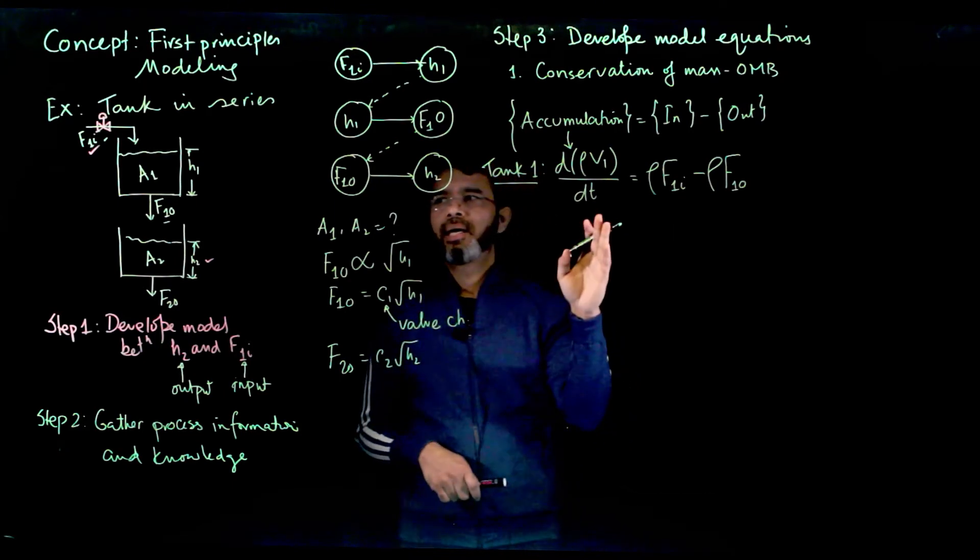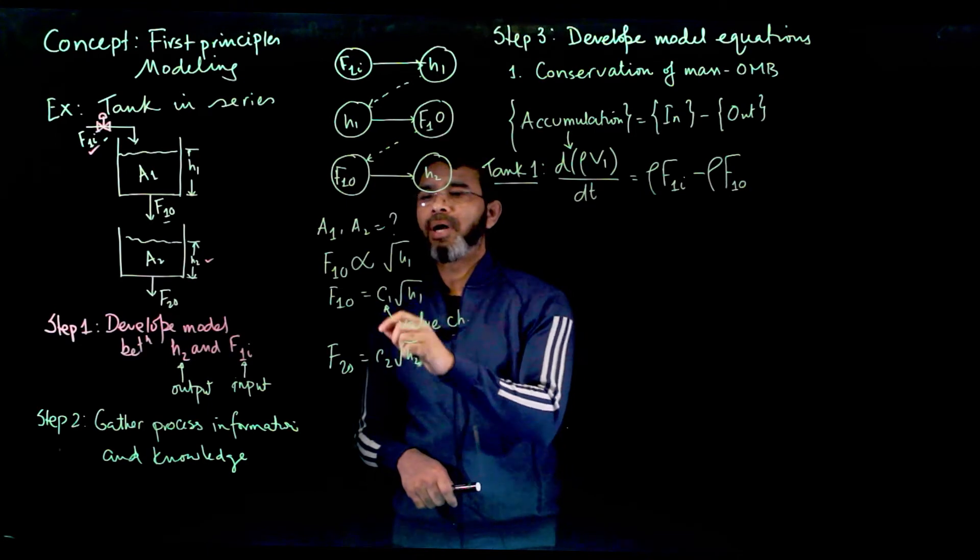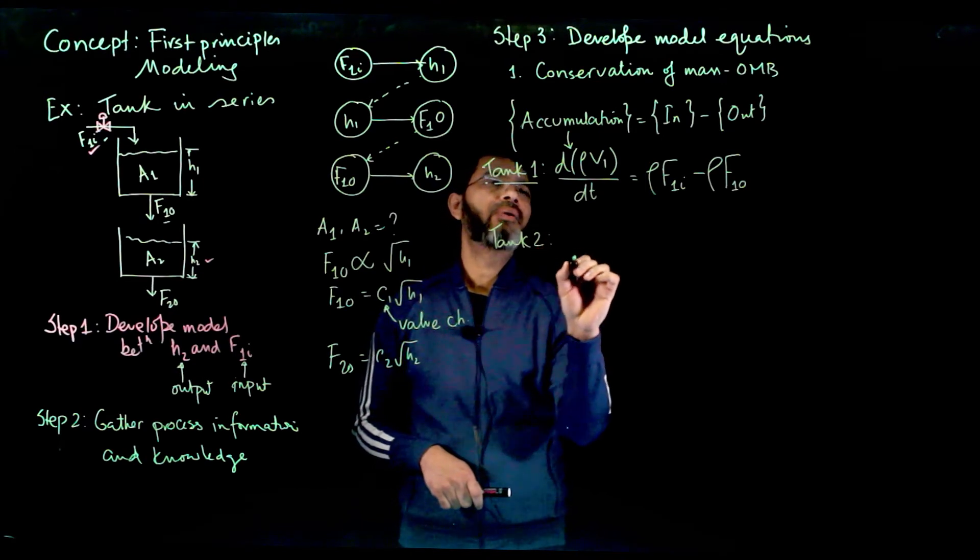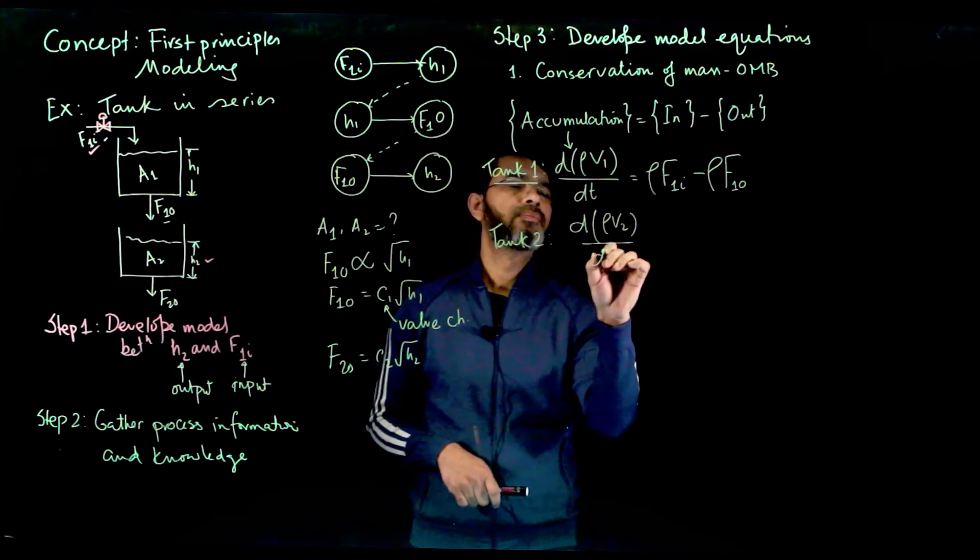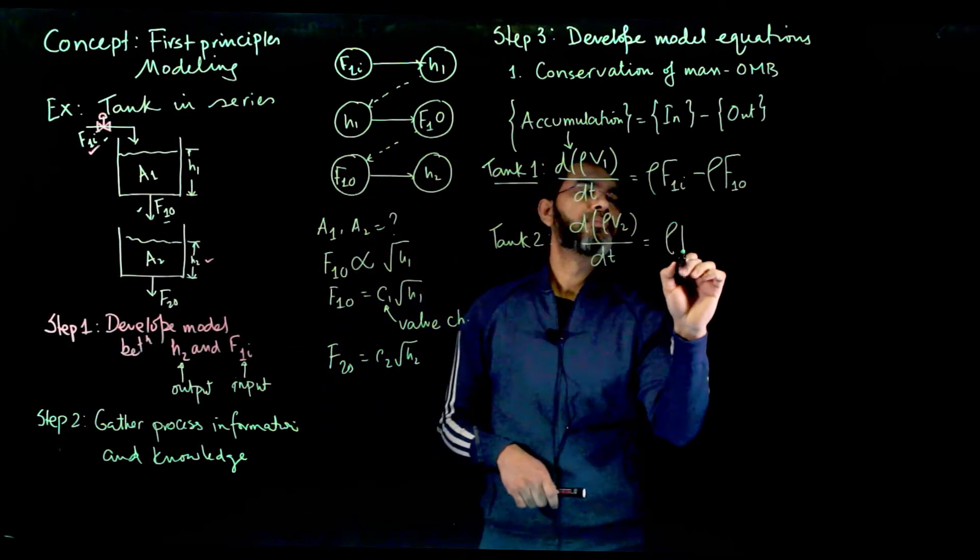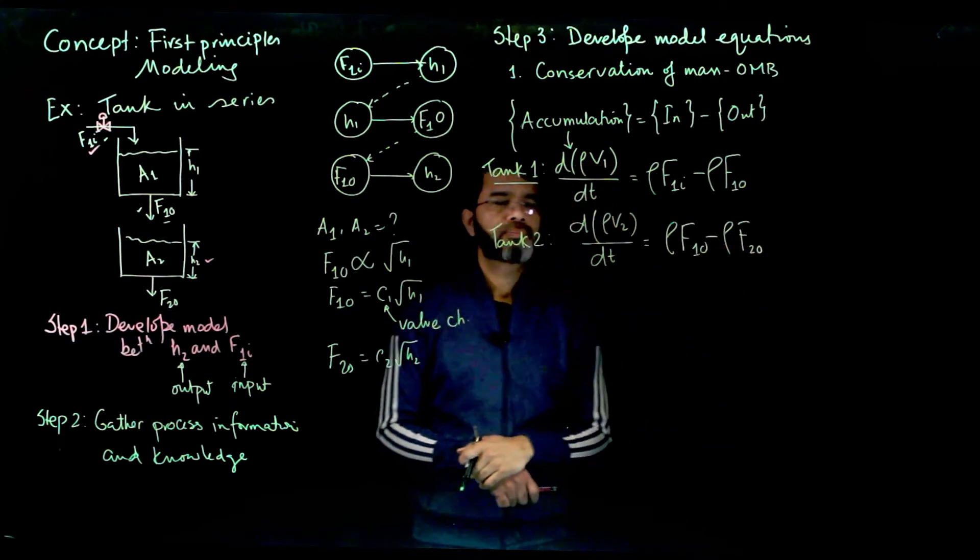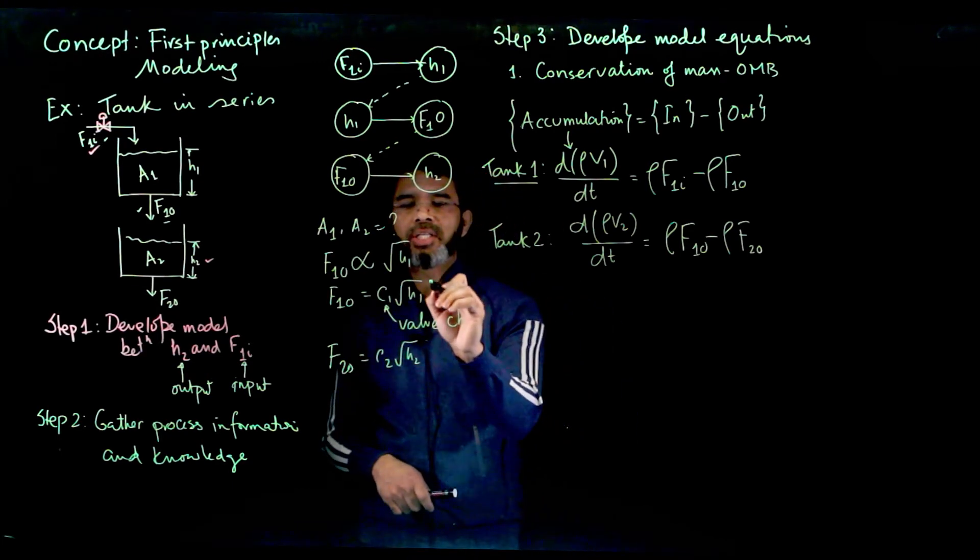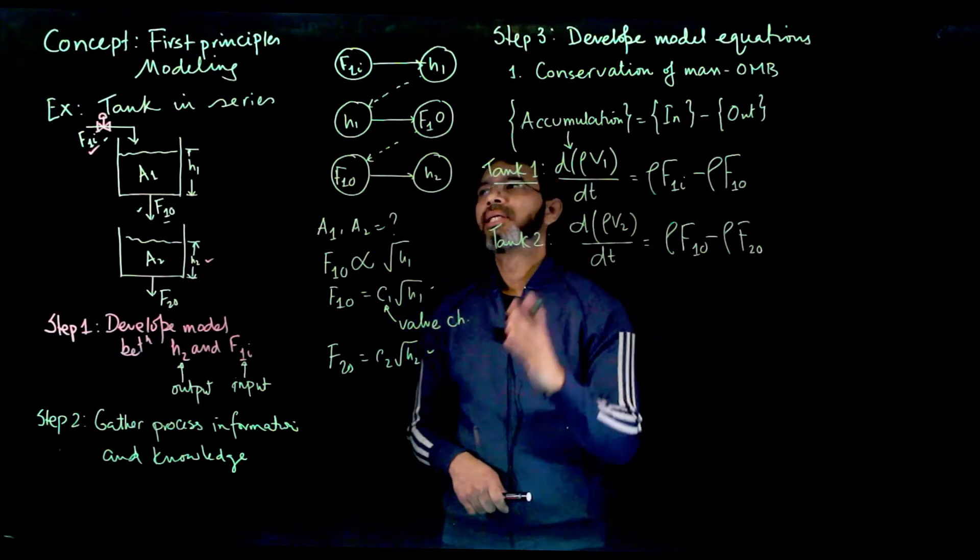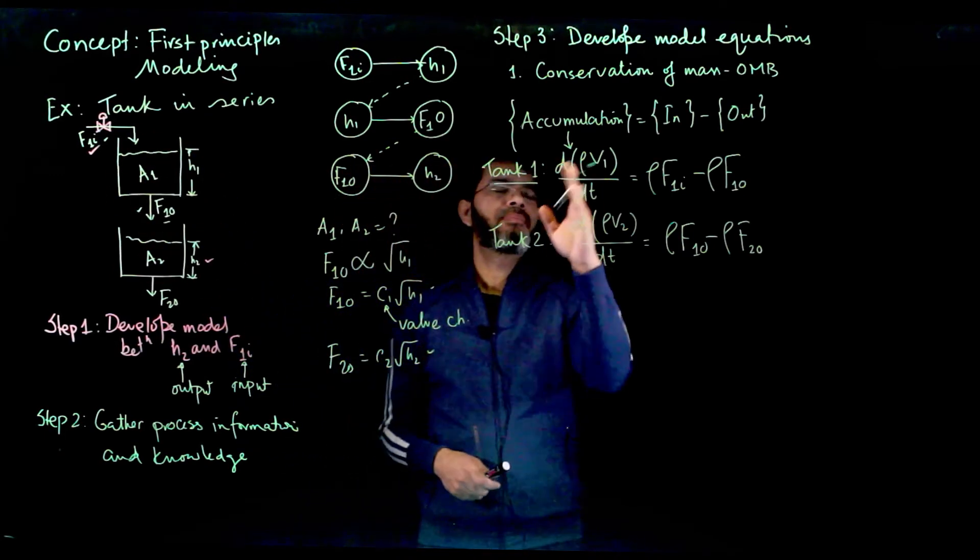Before going to that, let us look at the other equations. So now the second relation we have is the relation between F1O and H1. Okay? But for tank 2, based on that relation we can write d(rho V2)/dt equals the coming in is F1O times rho, going out is rho F2O. Now we have the other relations here, this one, this one and then you can assume the constant density and the cross sectional area to be not a function of level for both of the tanks. We can simplify that equation.